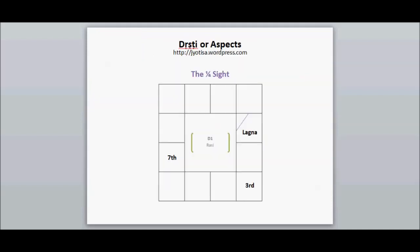if I open it up for you, you see there is something called a quarter sight. So all grahas, regardless, any graha, it has a quarter sight on the third and the seventh house.